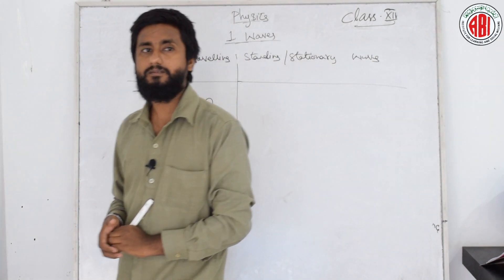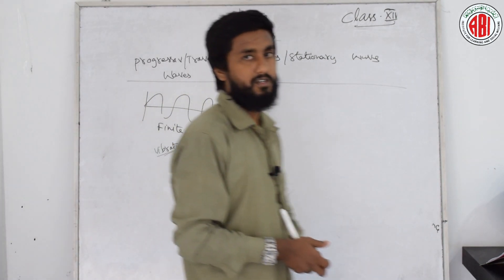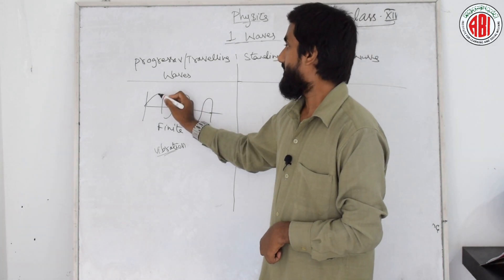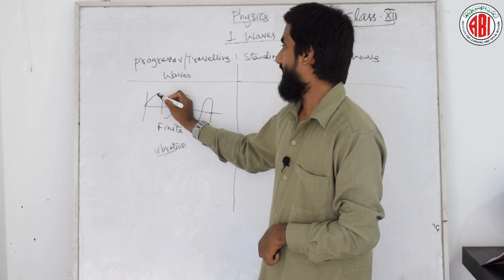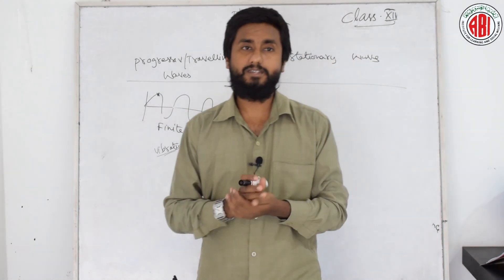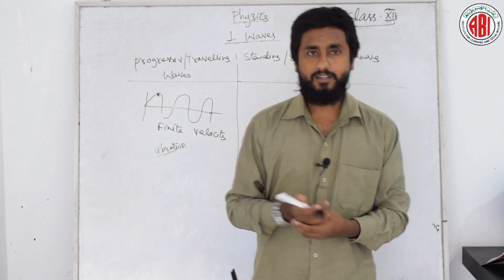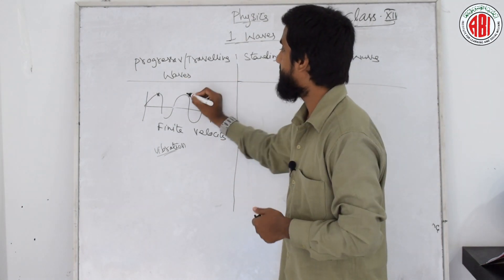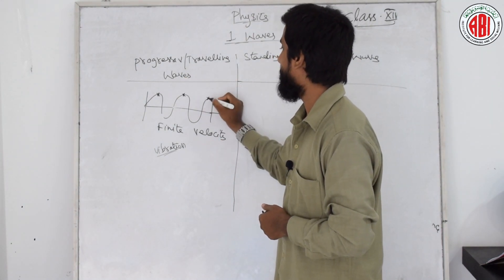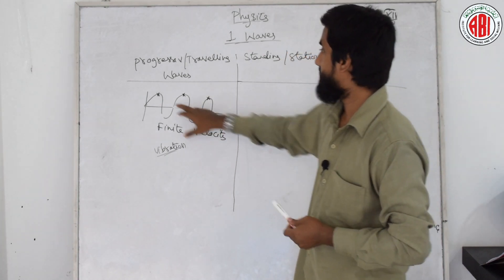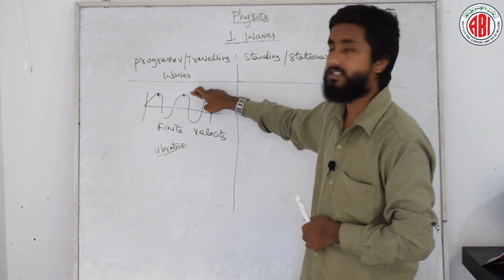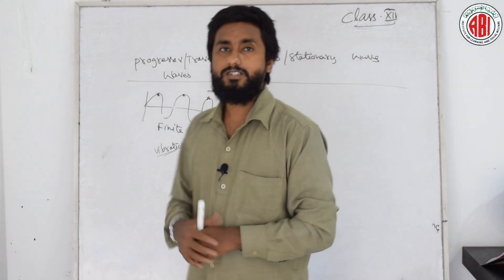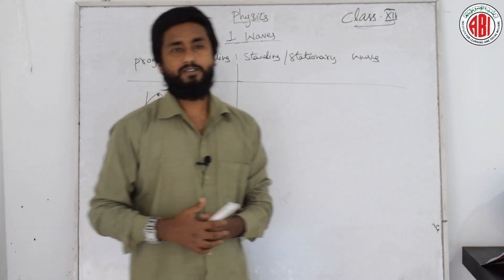Next: each particle of the medium executes identical periodic motion about the mean position. The mean position is the antinode point. On each antinode each particle will do identical periodic motion — if the particle is going straight, it will go straight; if going perpendicular, it goes perpendicular; if going up, it goes up. This is identical periodic motion.